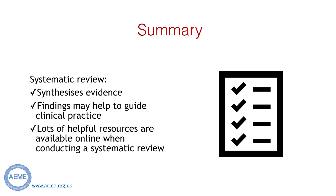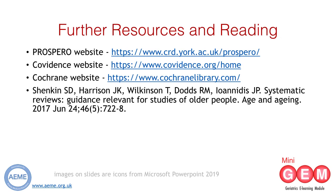In summary, a systematic review should involve an exhaustive search of the literature that aims to summarise the evidence of the research studies. Summarised findings reported in systematic reviews may help to guide clinical practice. There are lots of helpful tools and resources available when conducting a systematic review, and it may also be helpful to work with others who are experienced in conducting reviews, including librarians and statisticians. Thank you for watching this mini-gem presentation. Shown on the screen are some resources mentioned in the presentation that you may find useful when conducting a systematic review.